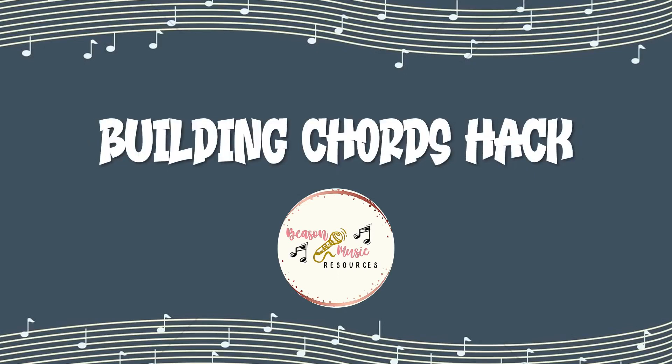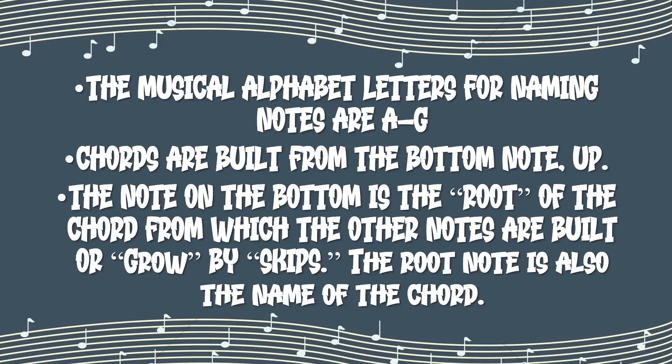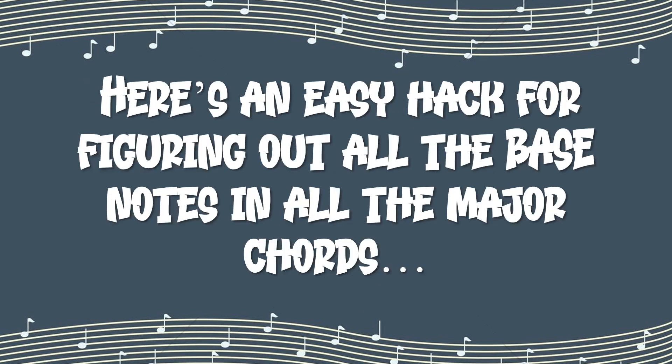Building Chords Hack. The musical alphabet letters for naming notes are A through G. Chords are built from the bottom note up. The note on the bottom is the root of the chord, from which the other notes are built or grow by skips. The root note is also the name of the chord.